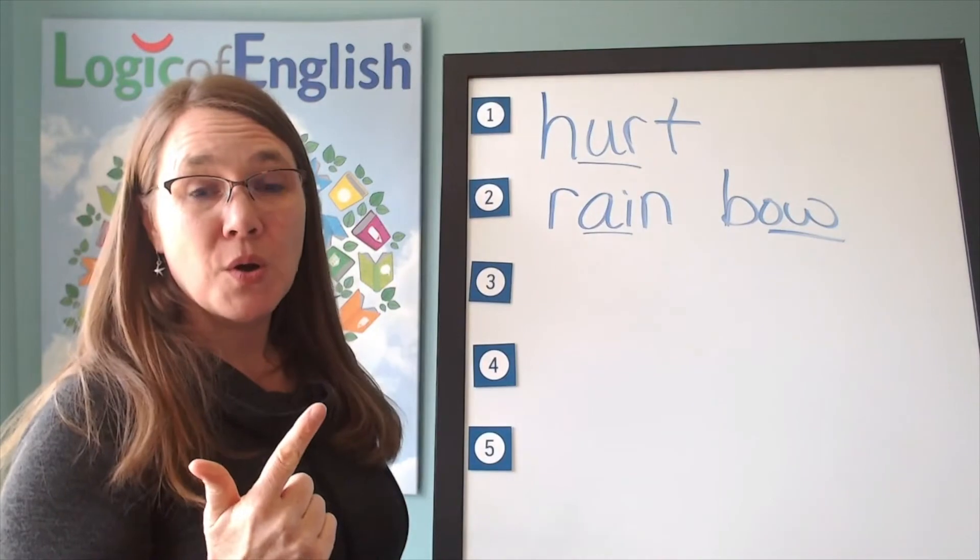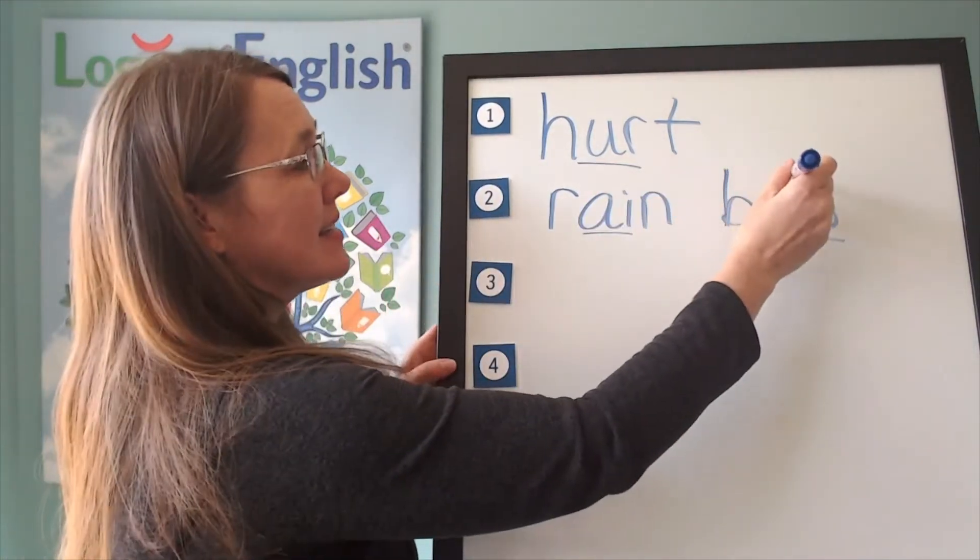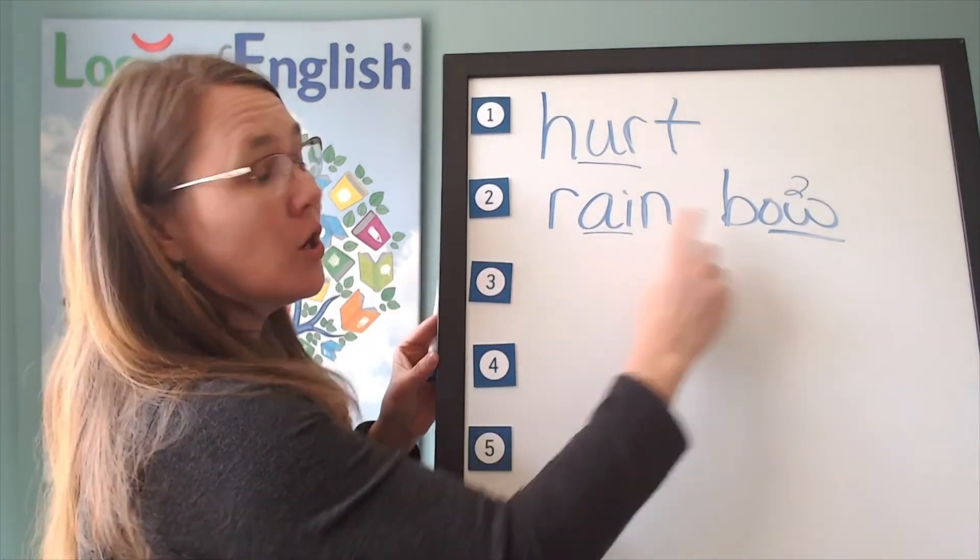How will we mark it? We'll underline the A and we'll underline the O. And what sound of ow, O do you hear in rainbow? That's right. It's the second sound, O. Let's read it. Er, A, M, B, O. Rainbow.